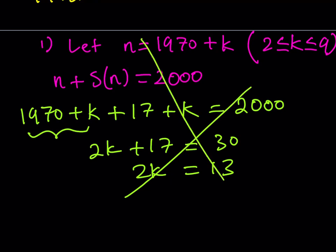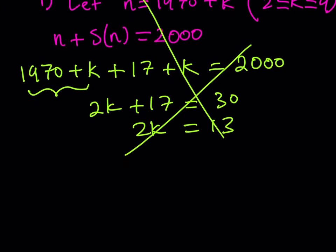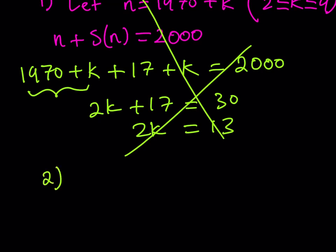That means that our number is not going to be 1972 through 1979, which means that it's going to be greater or equal to 1980, if there is any solutions. Let's go ahead and look at the second case.